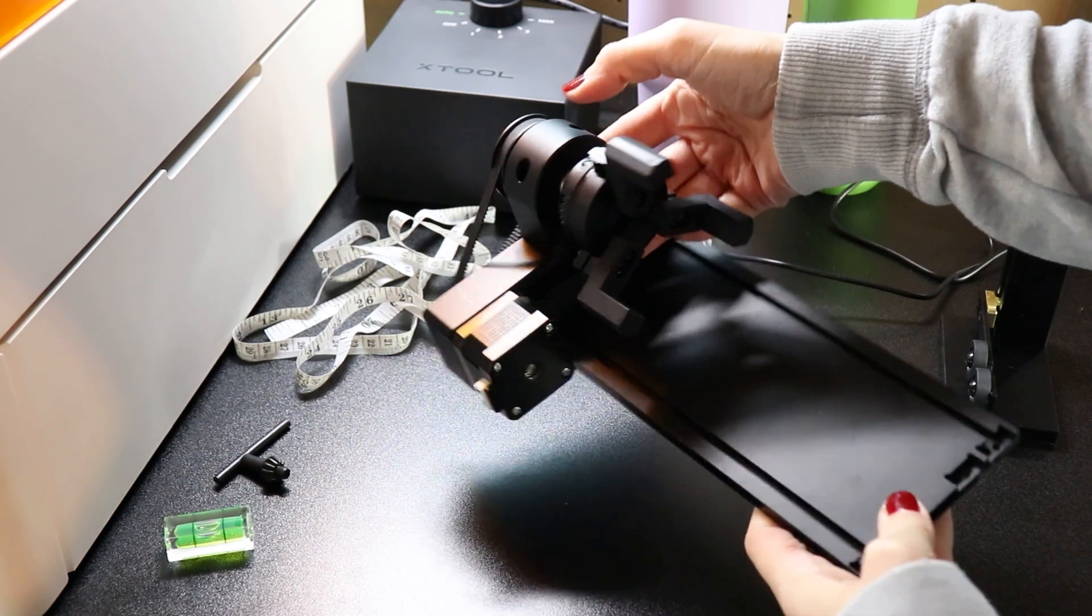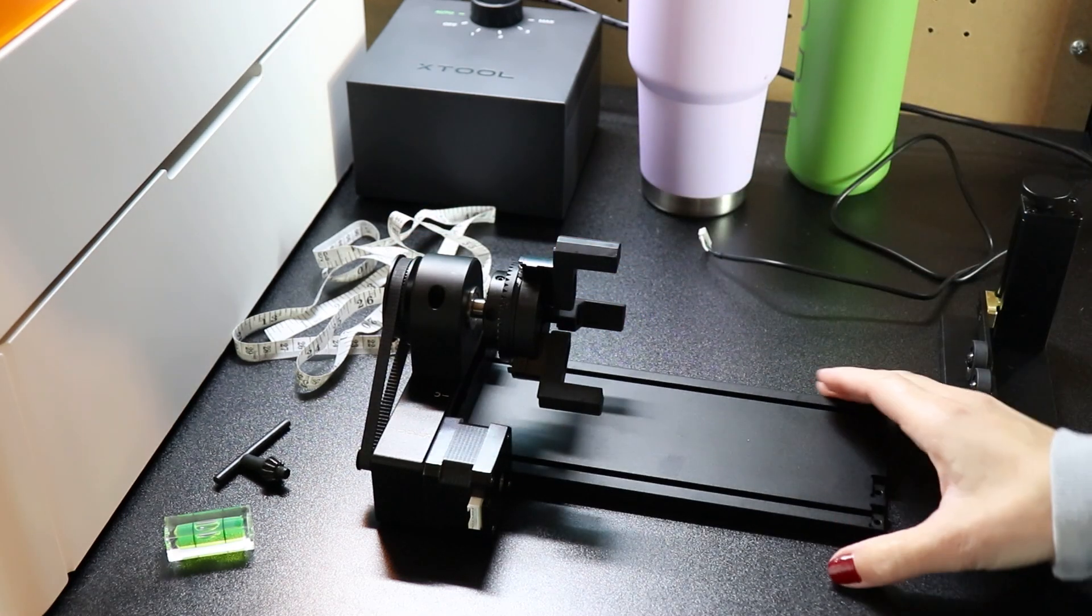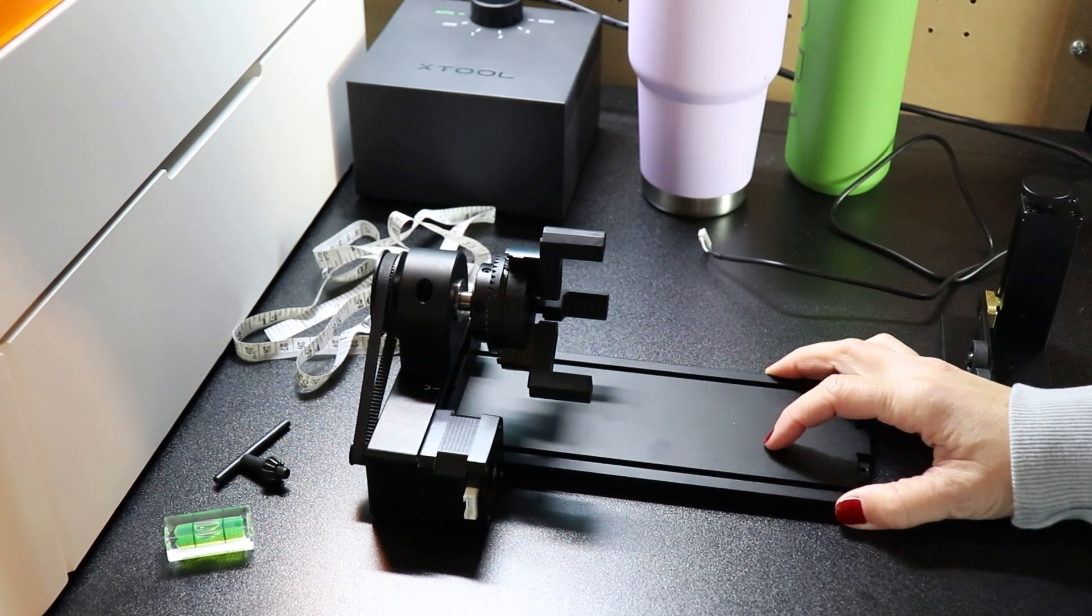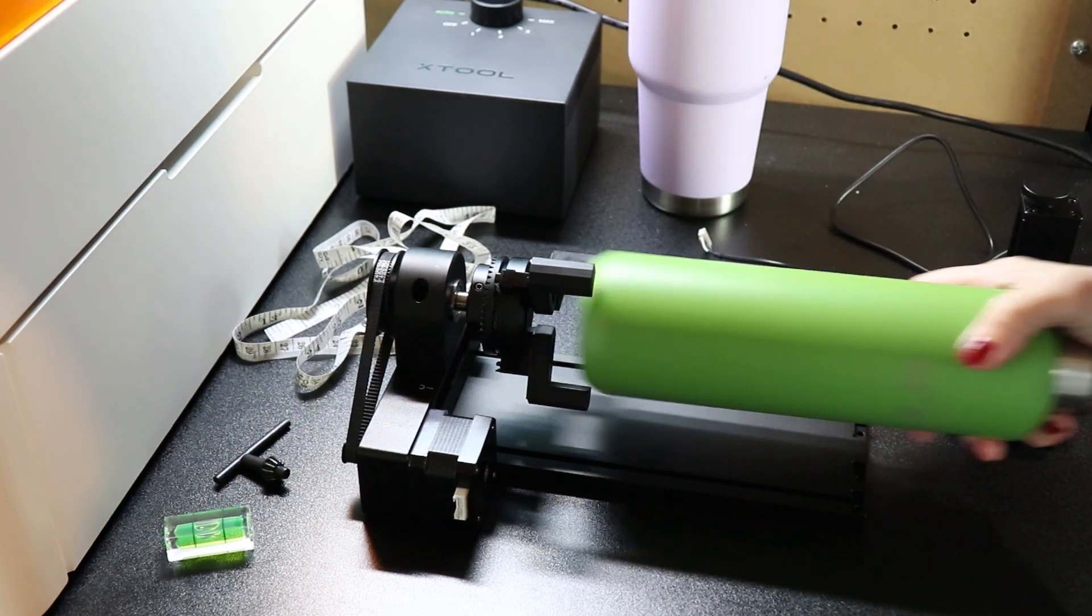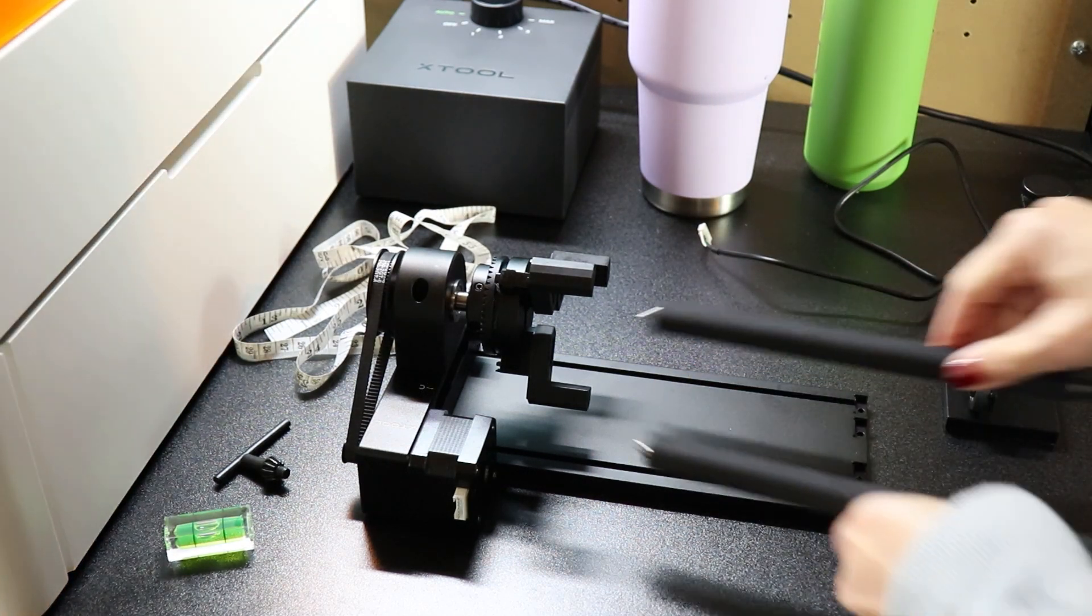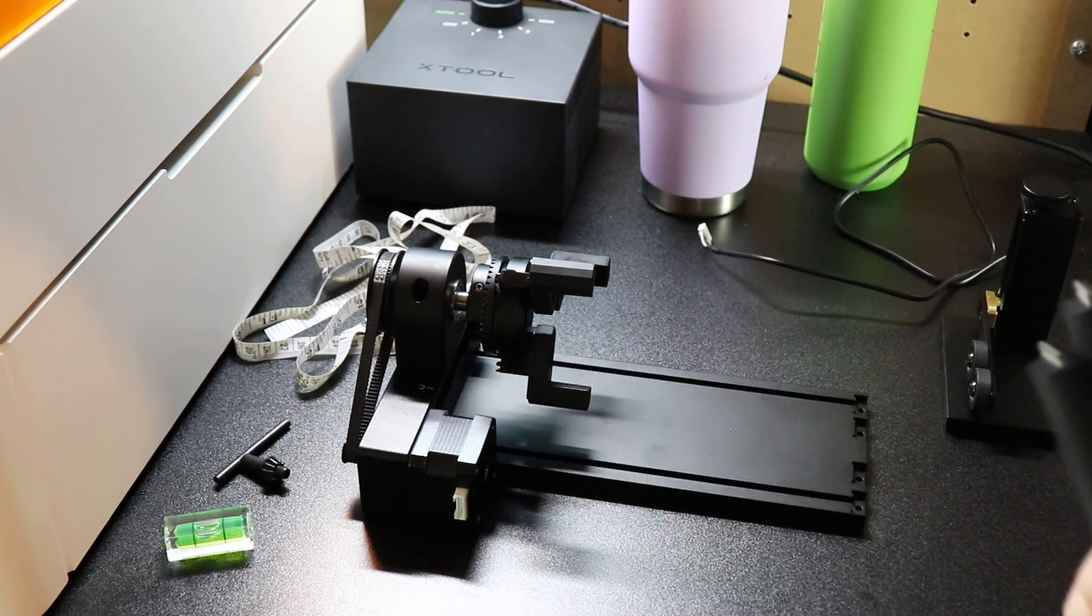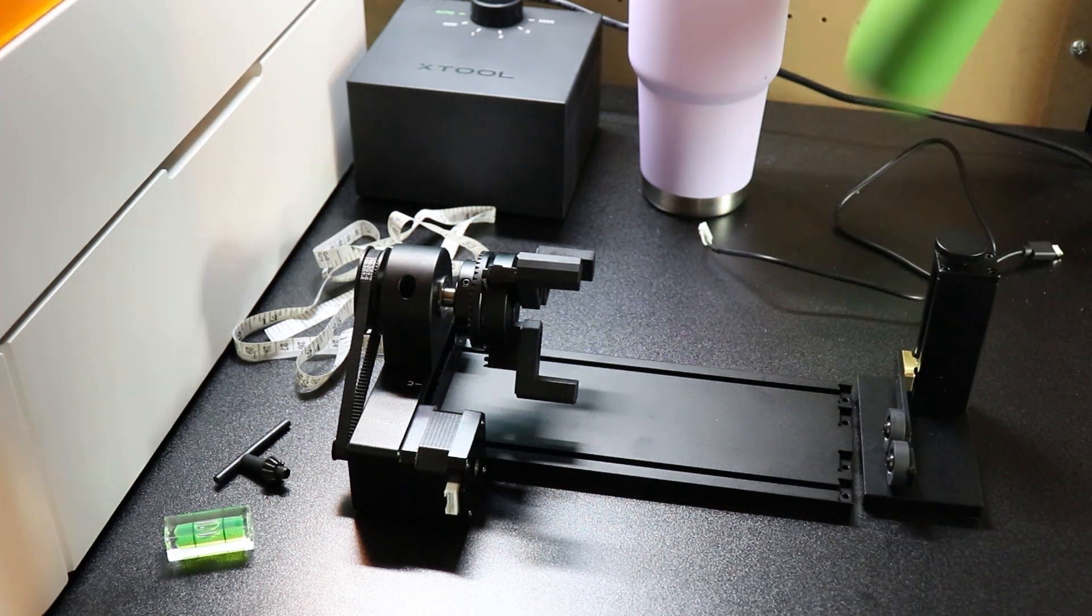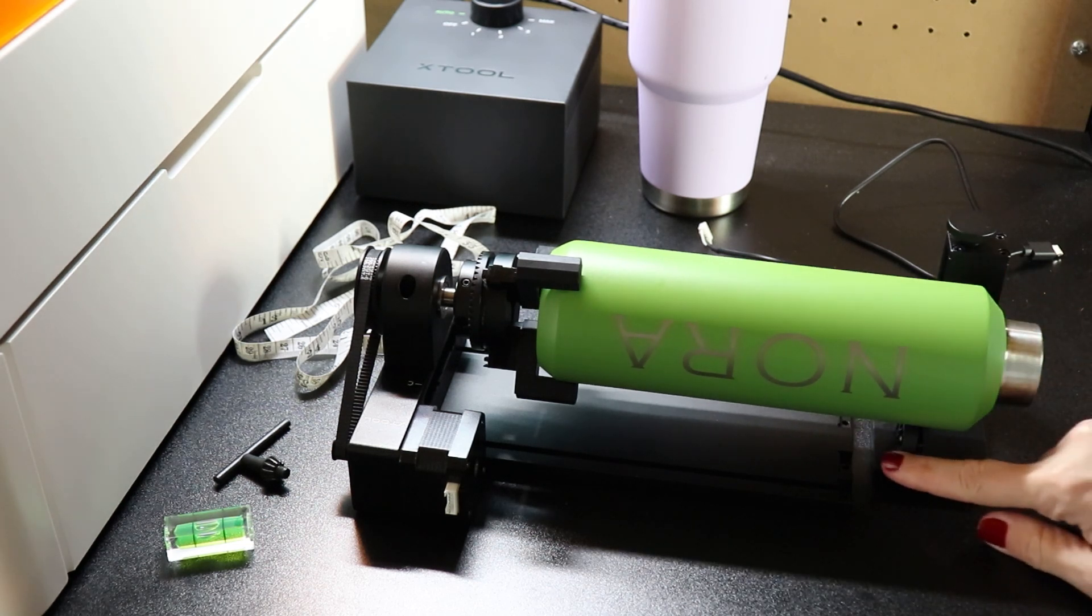This is the RA2 Pro. This is the standard rotary attachment for all X-Tool machines. When you get this, it's going to come with instructions on how to set this up for various machines. Right now, I have it set up with the chuck. The chuck works by holding tumblers like this inside of your machine. There are also rollers that go on here. The chuck would come off and these would sit right here and they would just hold your tumbler or any cylindrical item. The other thing that comes with it is this little end piece here that kind of acts as a leveler. So if you have your tumbler in here, this can level the other end for you.